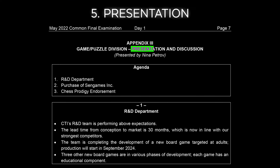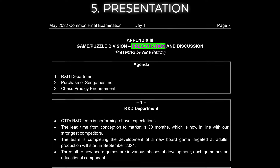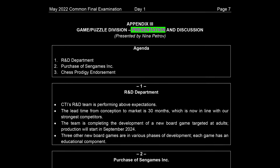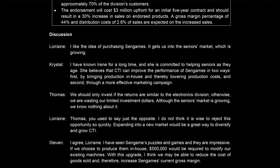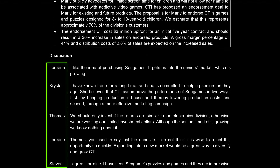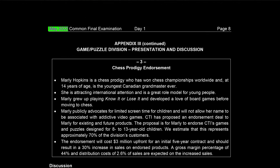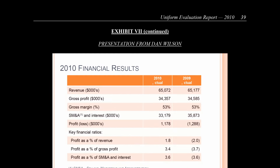The fifth style is presentation. This is when they show you a presentation followed by some discussion or additional information. This style is flipped because you're going to get the case facts in the appendix, then you see the dialogue that adds context to it. It has come up in newer cases like this 2022 case and in older cases like this one from 2010.